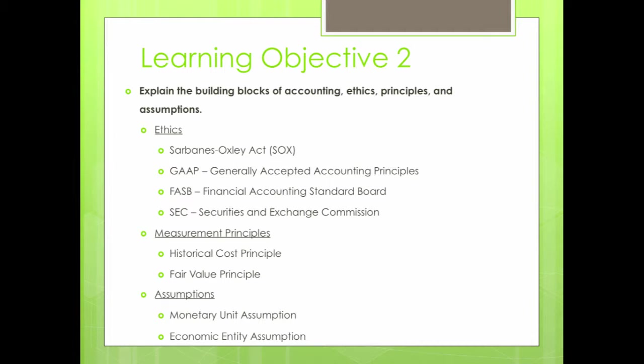The second objective was to explain the building blocks of accounting: ethics, principles, and assumptions. In terms of ethics, we covered the Sarbanes-Oxley Act. We learned about GAAP — generally accepted accounting principles — and the Financial Accounting Standard Board and the Securities and Exchange Commission. We also covered the historical cost principle, where you record the value of a property at the price it was purchased, and the fair value principle, where the recorded value changes depending on the current value, which can fluctuate.